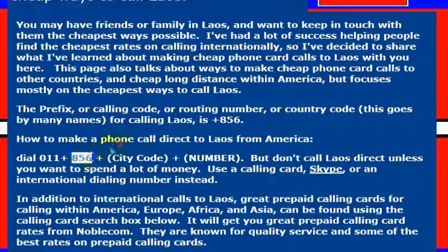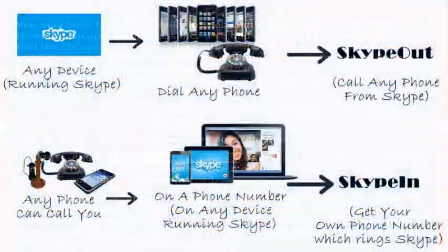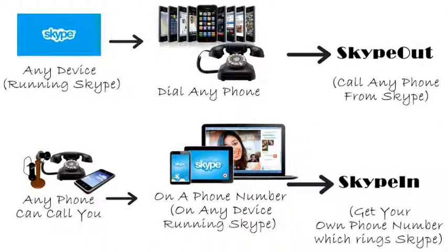So you would dial 011, and then 856, which is the country code for Laos — depending on how you say it and who you are. So you would dial 011-856, and then the phone number that you want to reach. But I wouldn't really recommend calling direct.